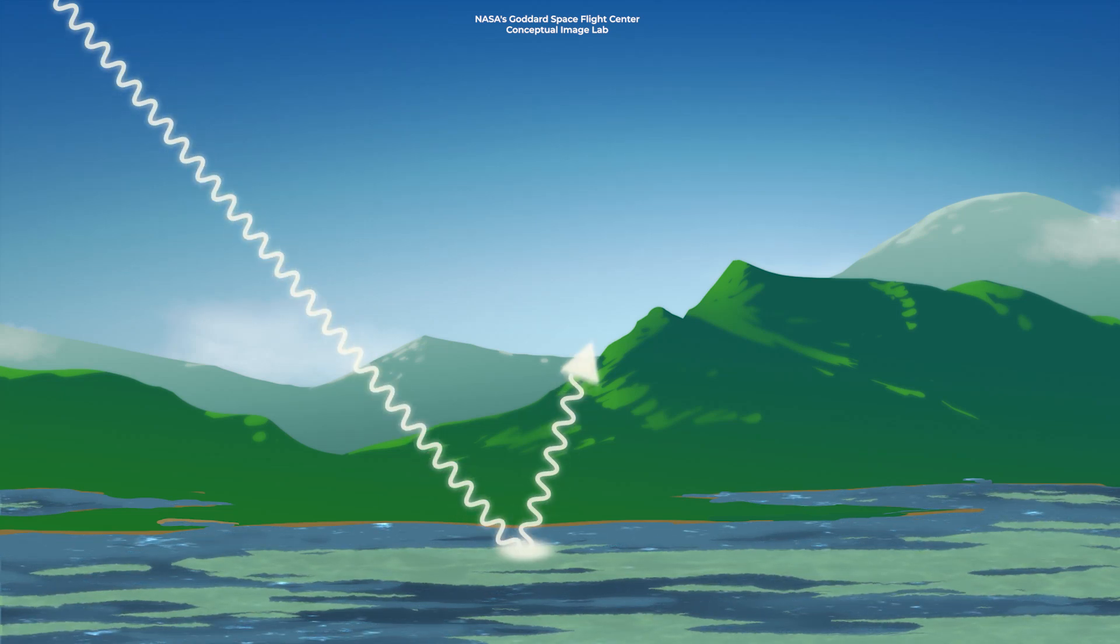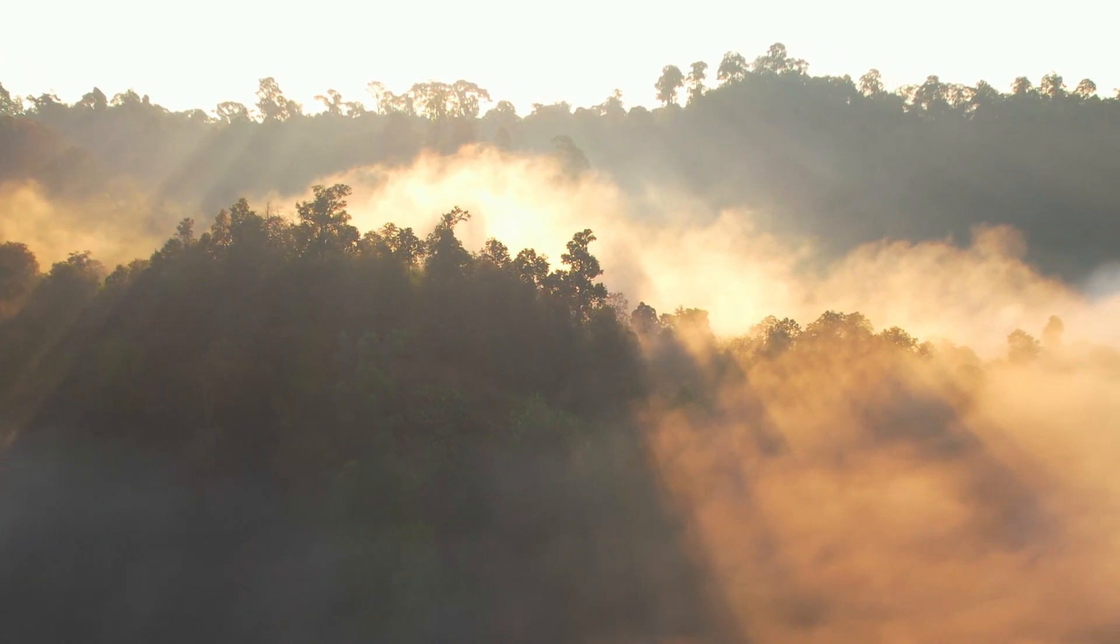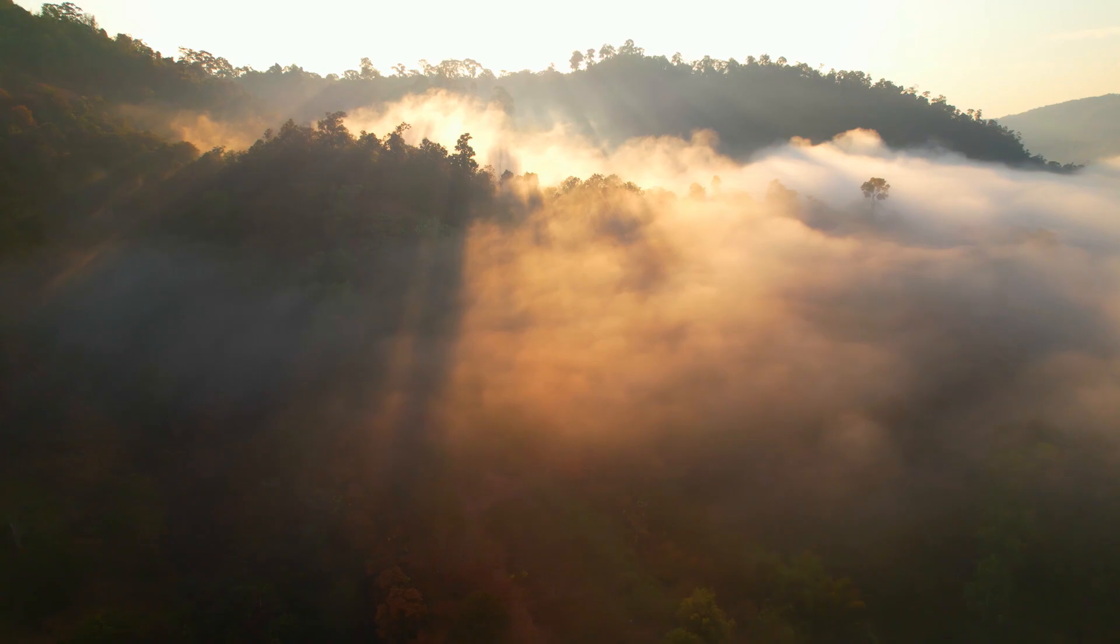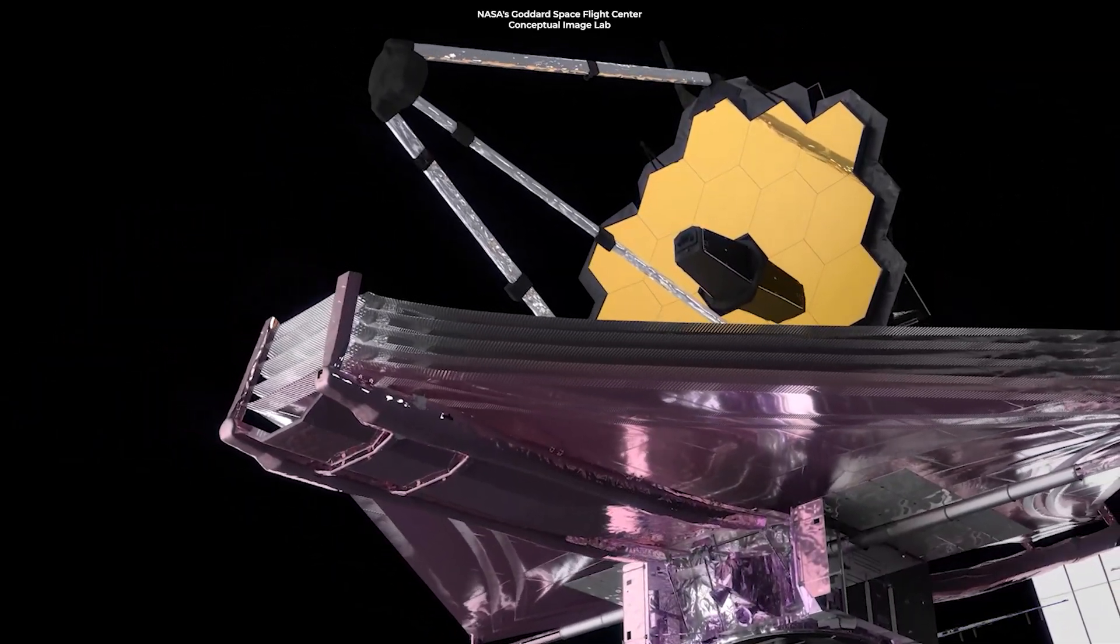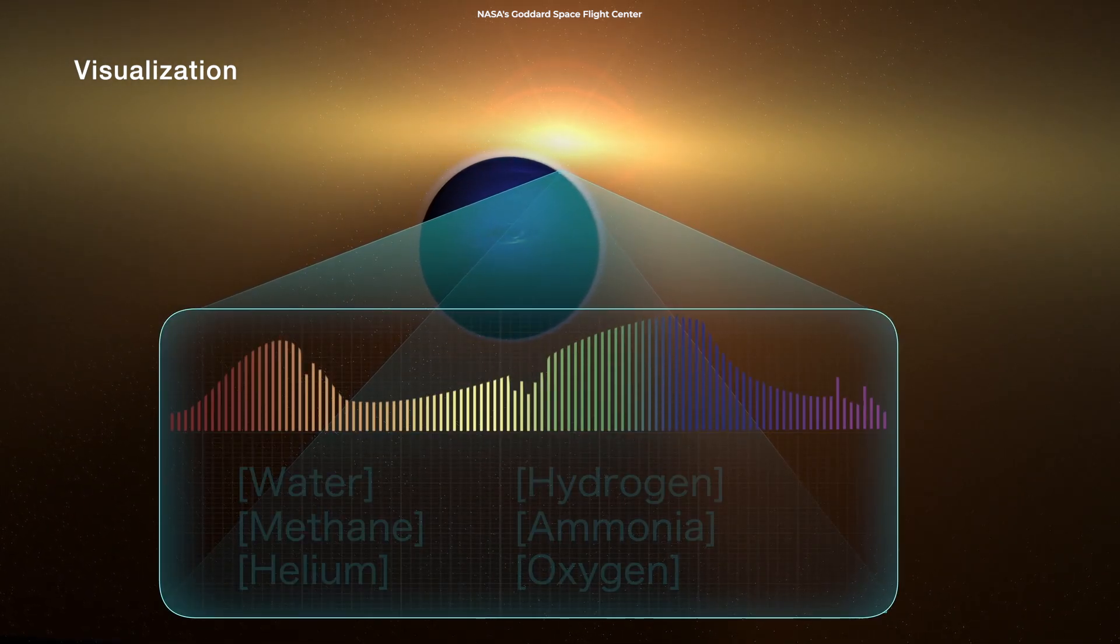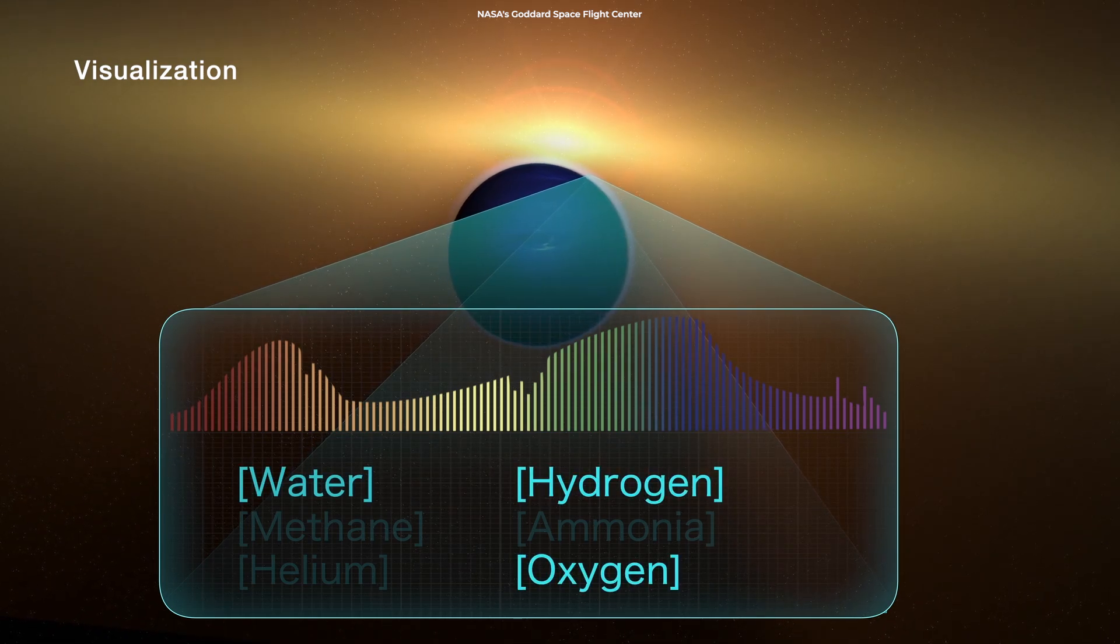When light bounces off the surface of a material or passes through a gas, certain wavelengths of the light are more likely to remain trapped in the gas or material's surface than others. This method can be used to recognize the presence of certain atmospheric gases that are associated with life, such as oxygen or methane, because these gases leave very specific signatures in light.